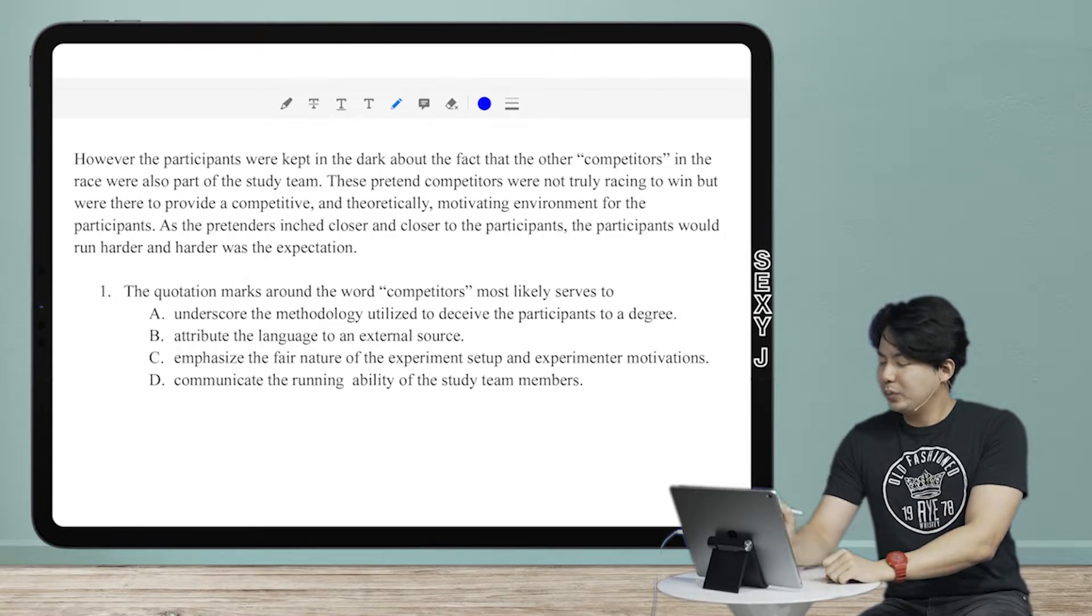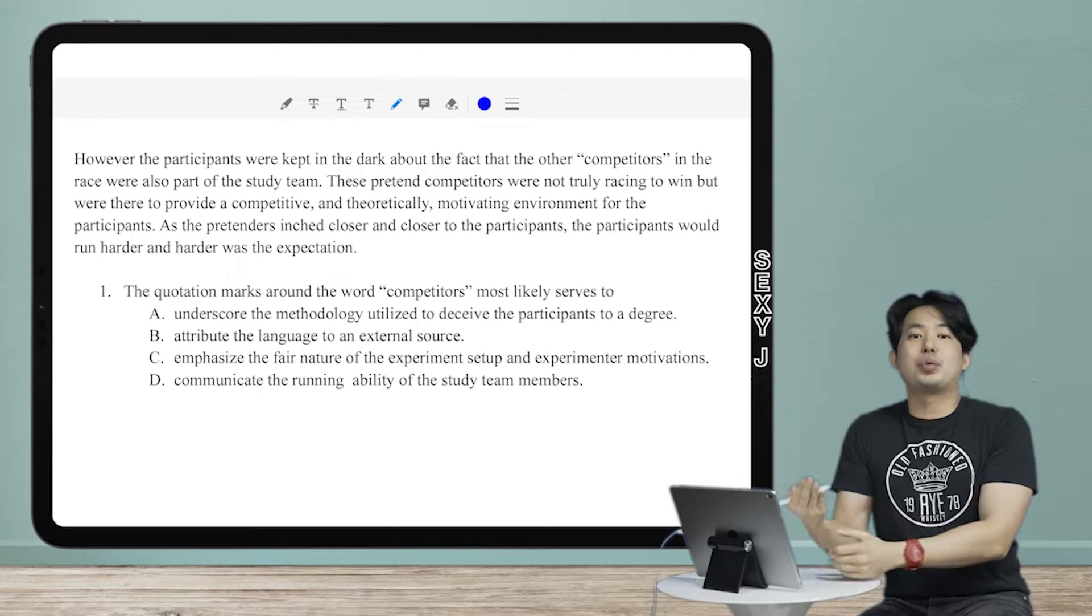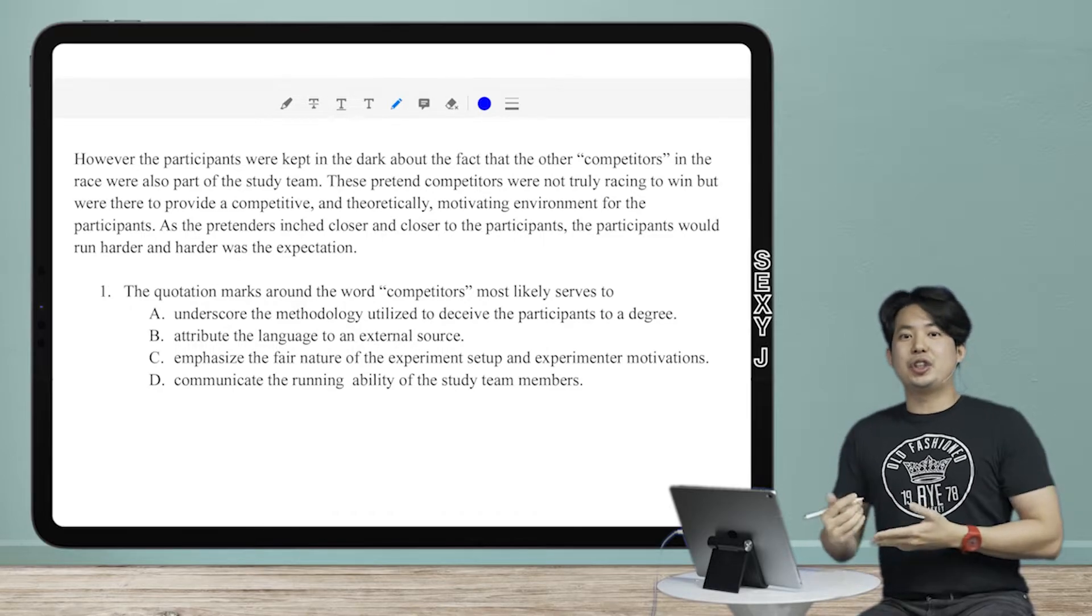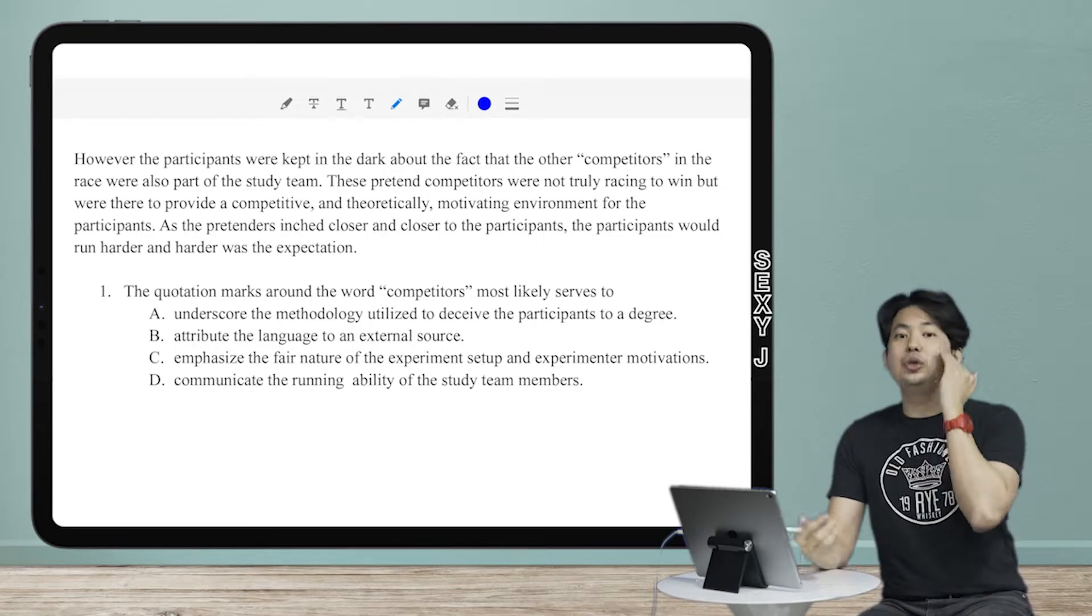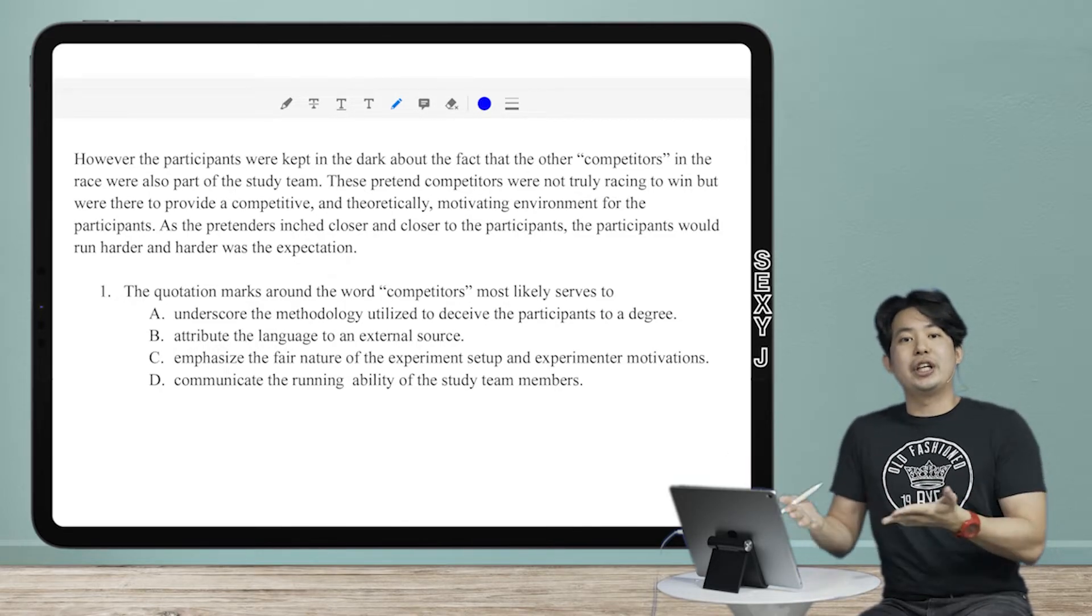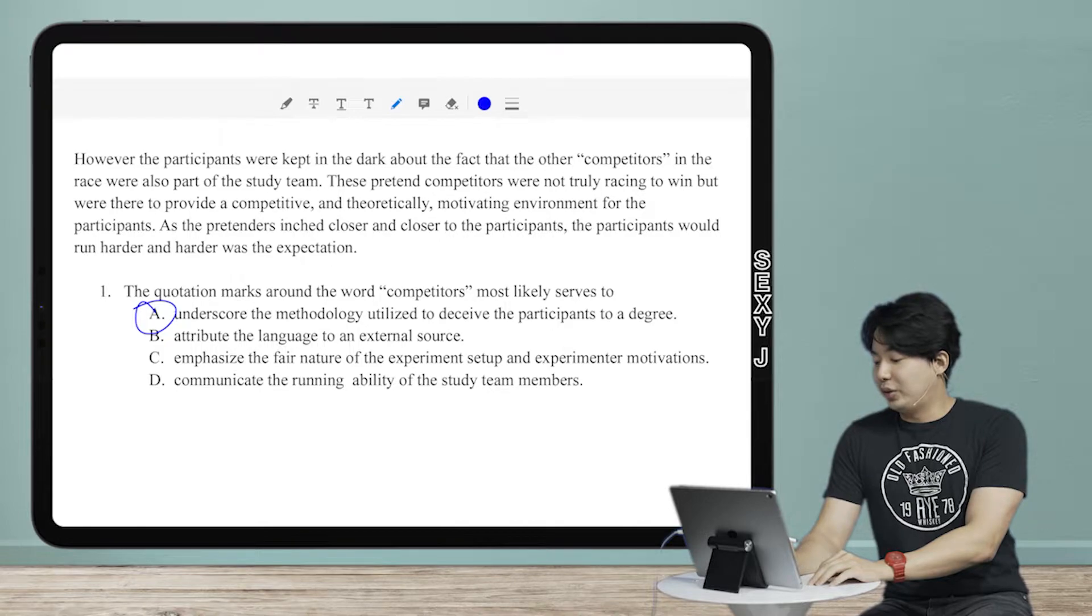So let's look here. The quotation marks around the word competitors most likely serves to... They are probably not actual competitors. They are probably like actors. They are being paid to do the study. You do that a lot in scientific research passages. So you have paid people pretending to do something for the sake of the study. So the answer here is A.